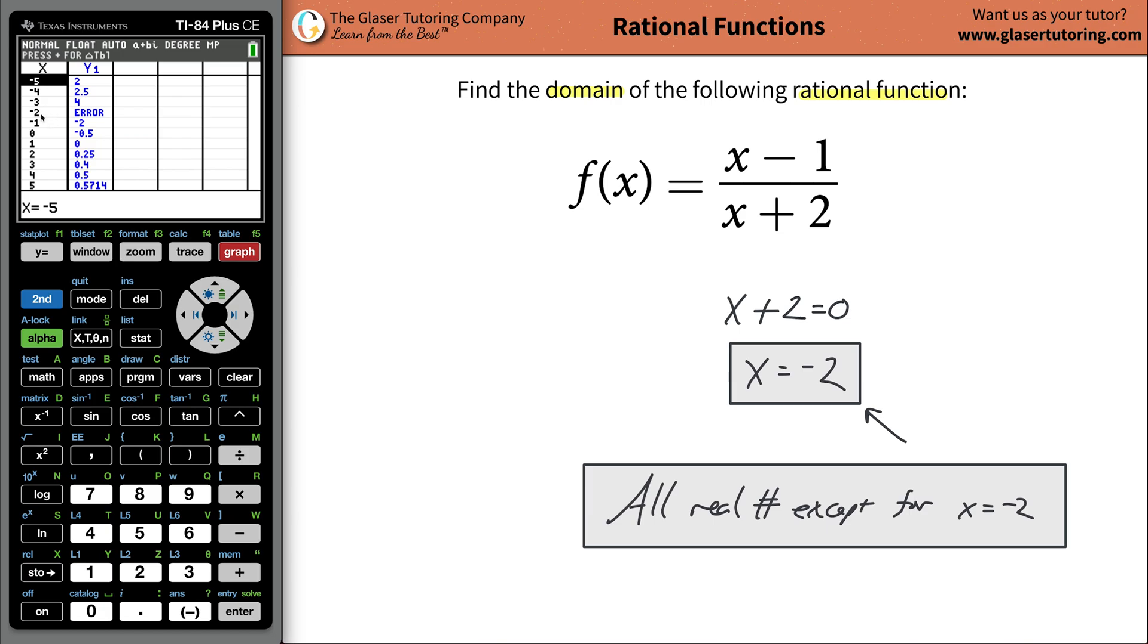So when you go to your table, you see how when x is negative 2, there's an error. Can't do it. Can't do it because when you plug in negative 2 here into your function, you get an undefined result. All right? So x cannot be negative 2.